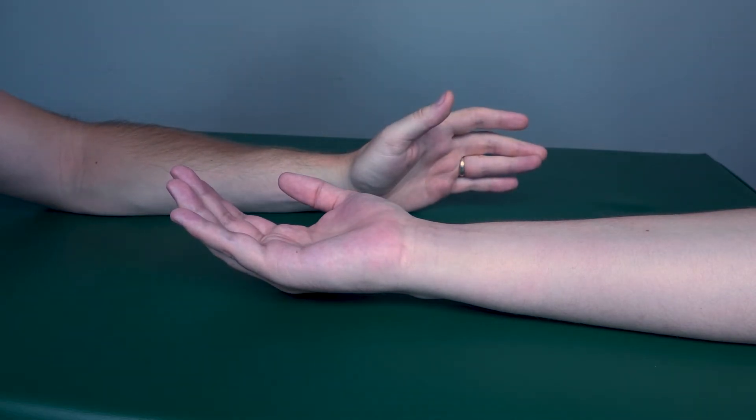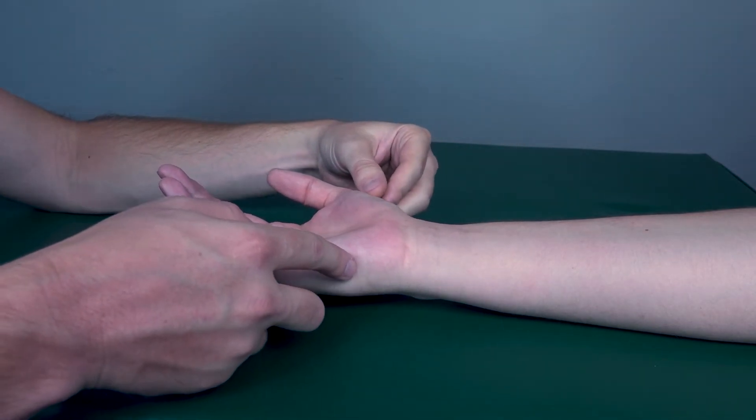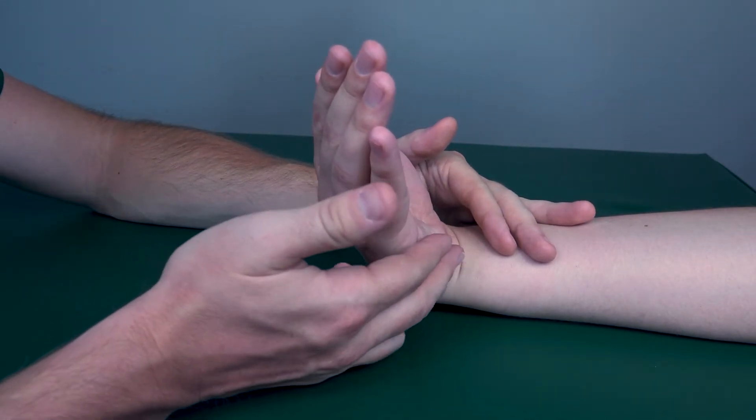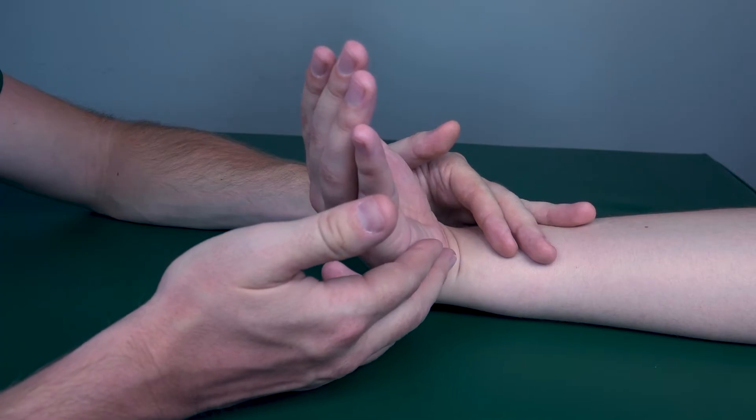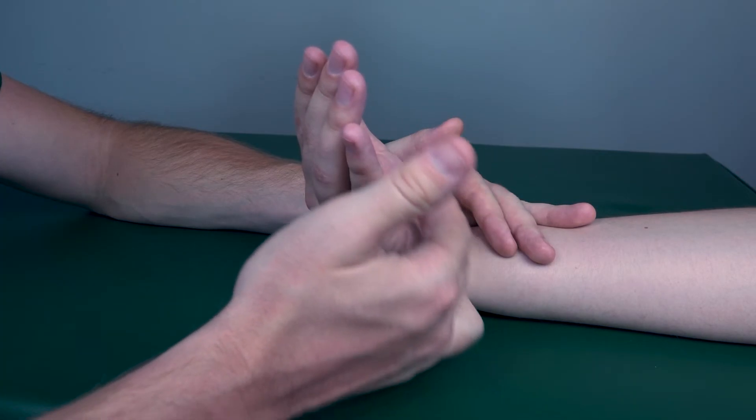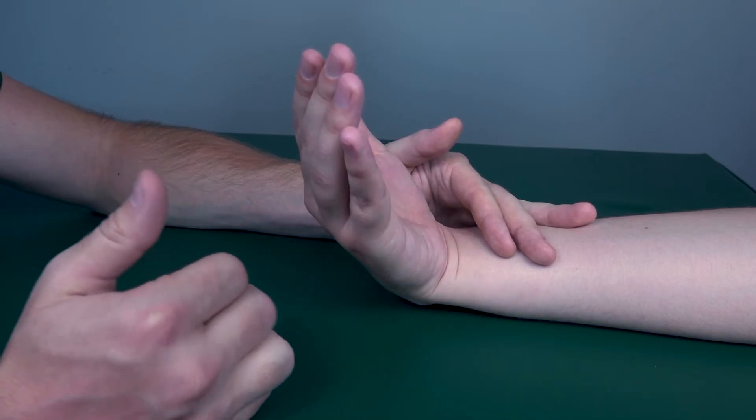To test for the flexor carpi ulnaris, I will have him bring his wrist ulnarly and then into flexion. And then I will add resistance right here on the fifth metacarpal, going into radial, pushing radially and into extension.